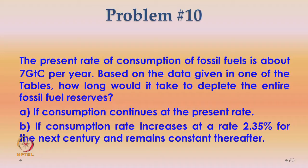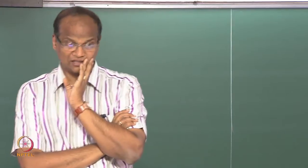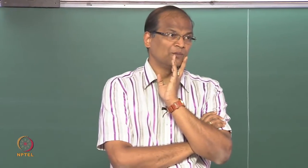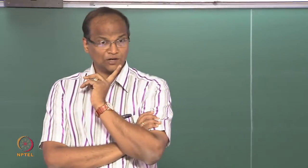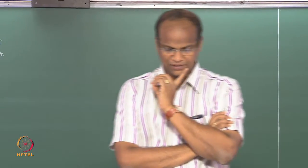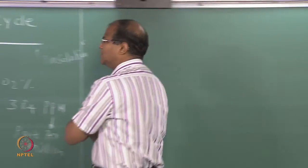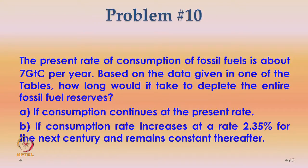I am giving you two scenarios. Scenario A: if the consumption continues at the present rate of 7 gigatons carbon per year — that is 7 × 10¹² kg per year. Scenario B: if the consumption rate increases at a rate of 2.35% for the next 100 years and then remains constant thereafter. It is implicit that the fuel lasts more than 100 years, otherwise part B would be irrelevant.